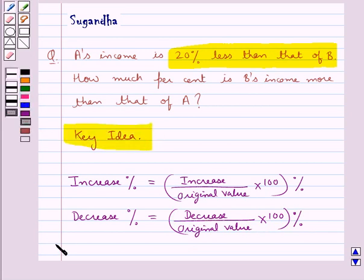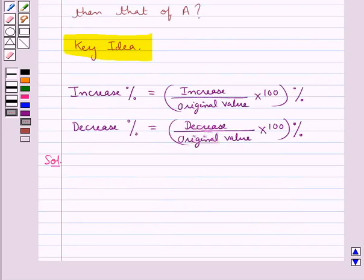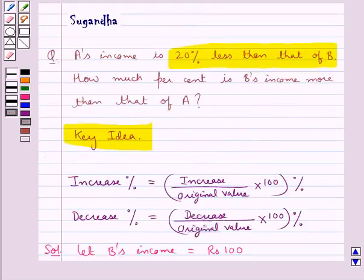Let's move on to the solution now. First, we assume let B's income be equal to Rs. 100.